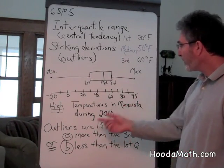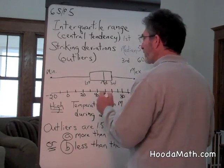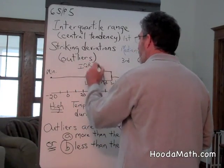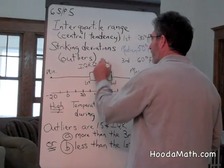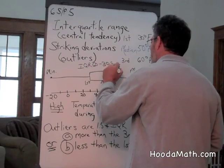Our interquartile range is the difference between the third quartile, 60, and the first quartile, 30. And that equals 30 degrees Fahrenheit.